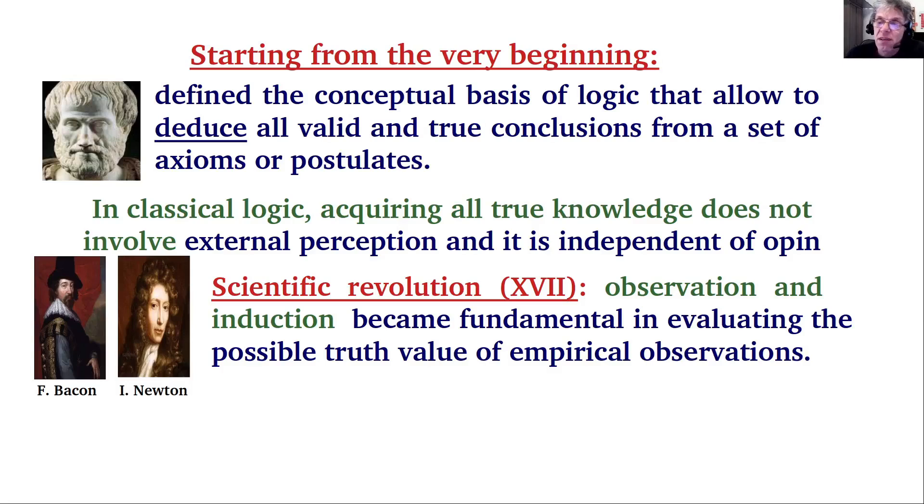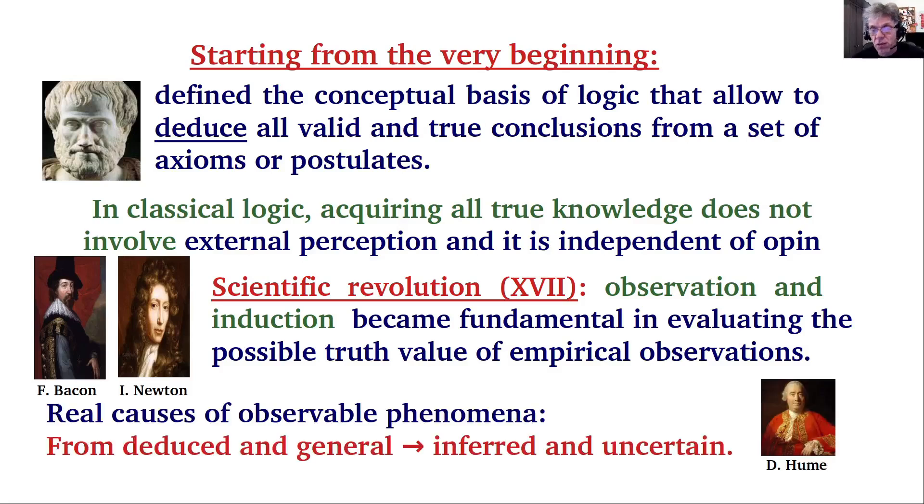This was changed through the scientific revolution in the 17th century, where observation and induction, that is, reaching general conclusions on the basis of observing a small set of natural phenomena, became fundamental in evaluating the possible truth value of empirical observations. This was actually the problem of induction laid out by David Hume. At this point in the 17th century, the real causes of observable phenomena passed from being deduced and general, as was done during the medieval ages, to inferred and uncertain.